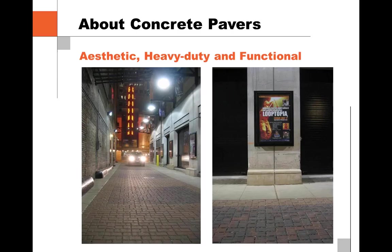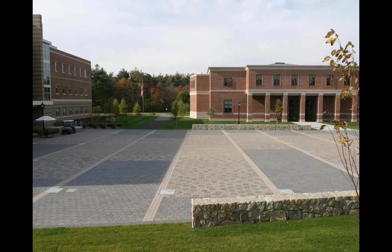When we talk about permeable pavement, this is a photo of Couch Place in downtown Chicago — an alleyway that links the theater district from the Goodman to the Chicago Theater on State Street. They wanted it to be both functional and decorative. It's heavy-duty so trucks can drive in to unload for the theaters, and it handles garbage pickup without damage. It's also functional in that it allows water to flow through to the base area and infiltrate into the natural soils beneath.